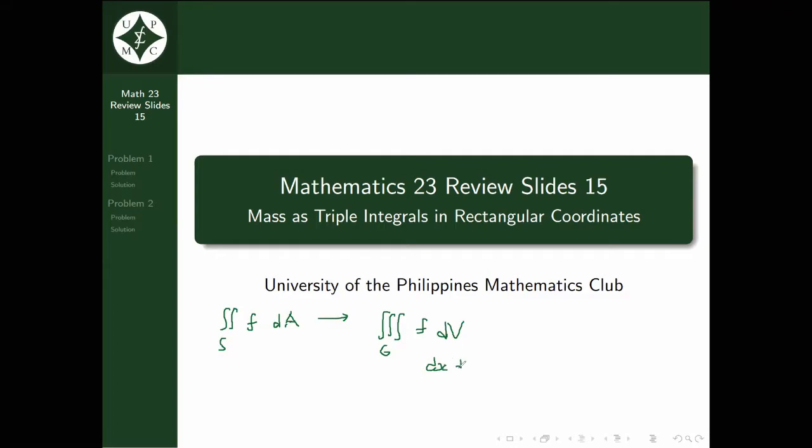dA before was just dx, dy, but now dV is dx, dy, dz. You're going to have to recall your 3D surfaces from previous courses in math. This is read as the triple integral over the solid G of f dV.